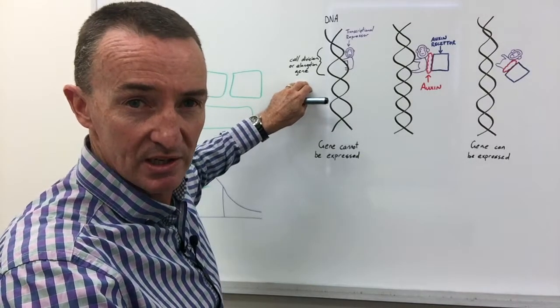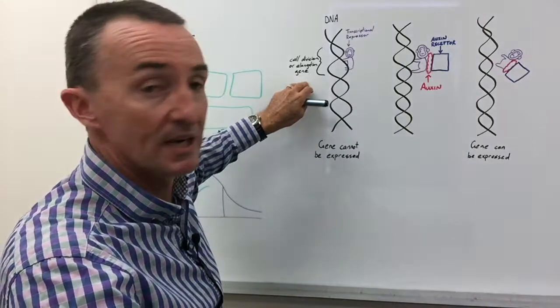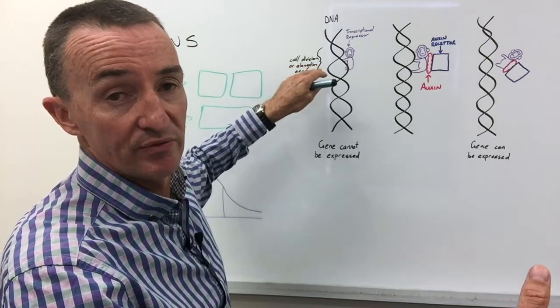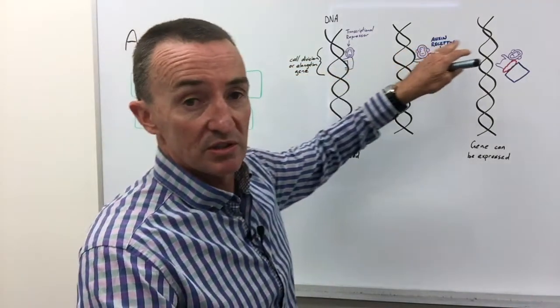If we get good growing conditions with moisture and warm temperatures, auxin is produced to fire up cell elongation and cell division. So what does the auxin do?